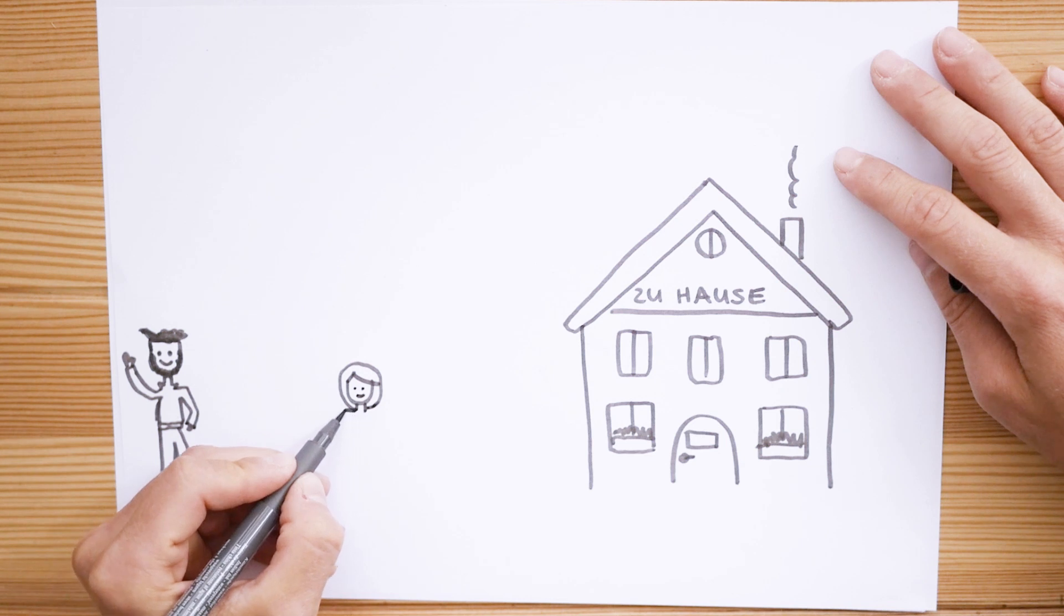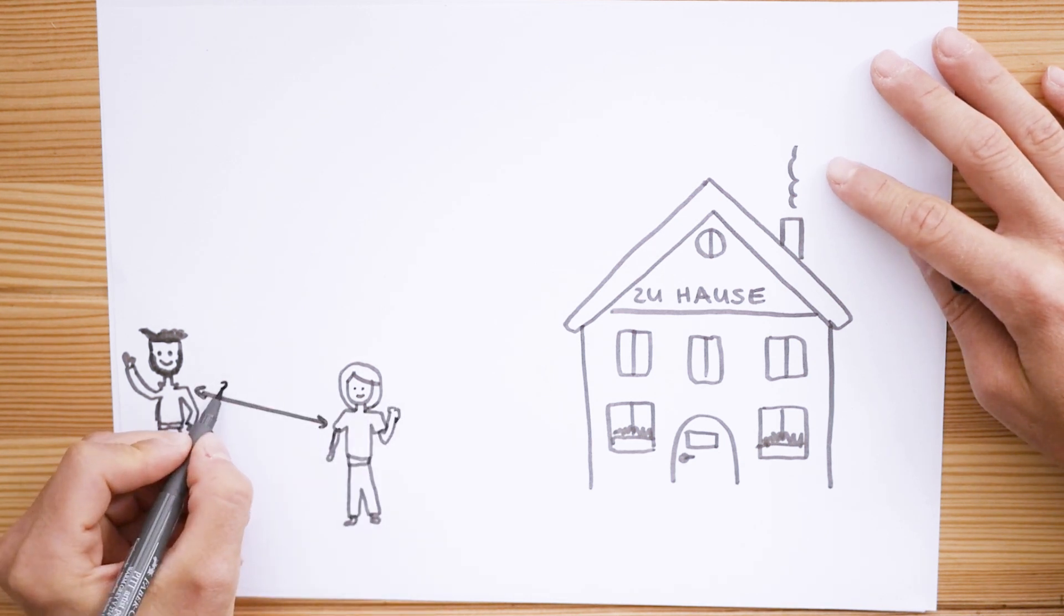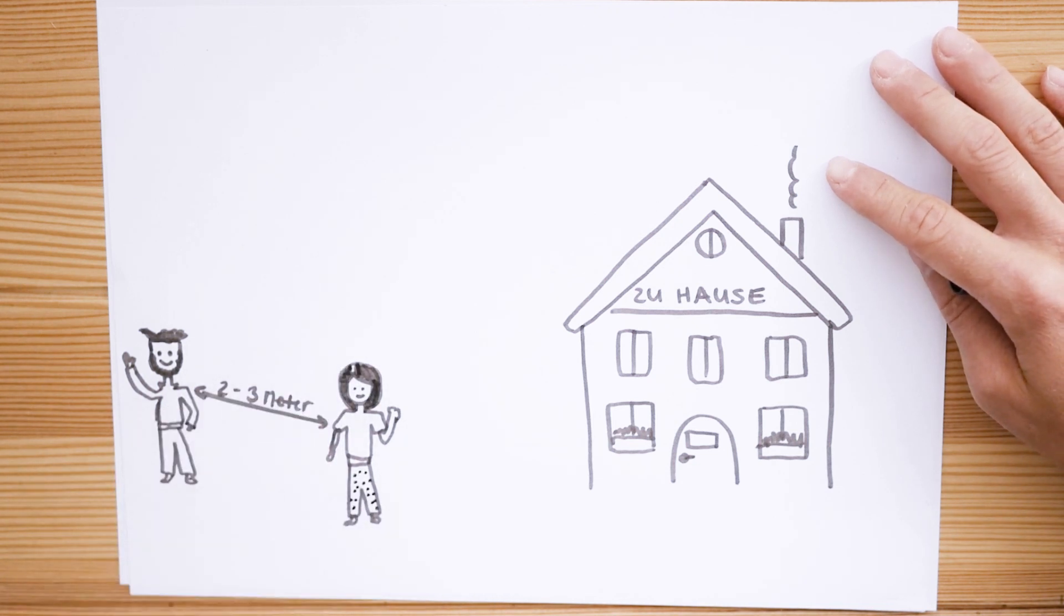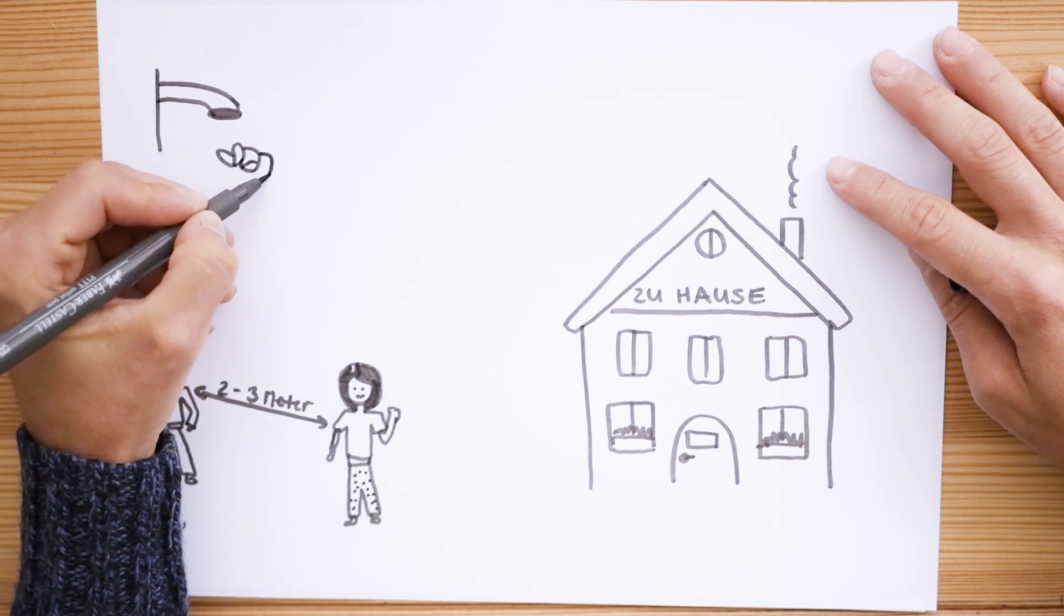When you leave the house, for example when you go shopping with your parents, it's important that you keep as much distance as possible to other people, preferably two meters, that you touch as little as possible and that you wash your hands properly and with soap as soon as you get home.